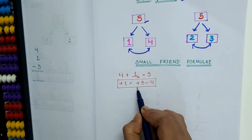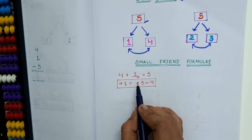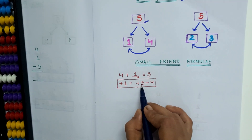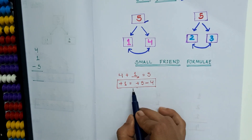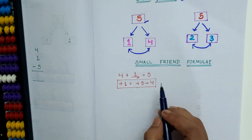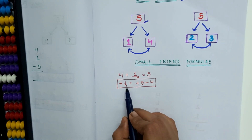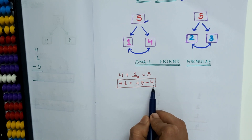This is one of the small friend formulas for adding 1. When we need to add 1, we need to add 5 first, then subtract the small friend of 1, that is 4. So our formula will be: plus 1 equals to plus 5 minus 4.